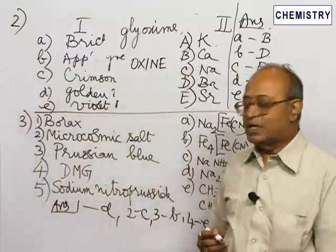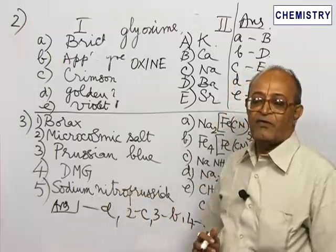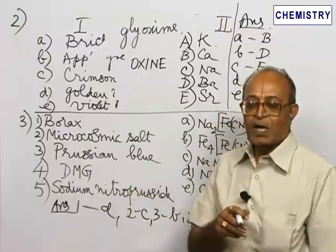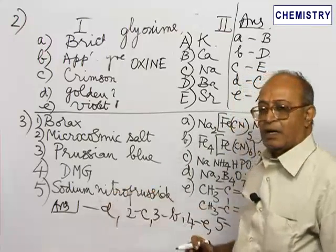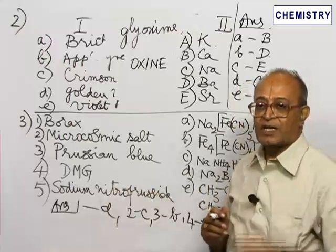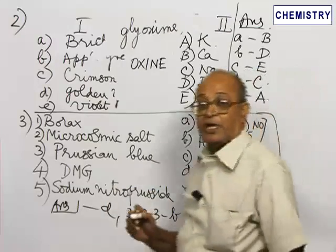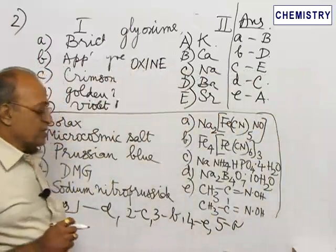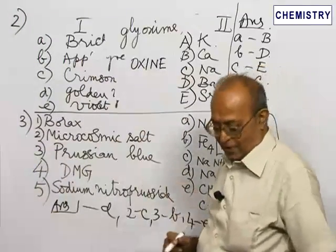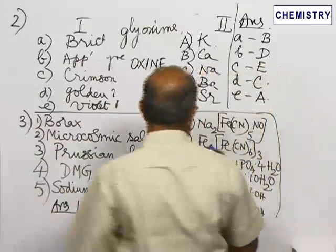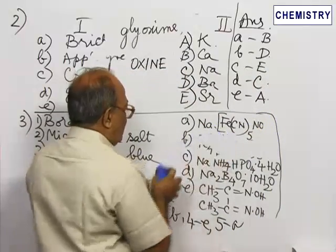DMG, dimethylglyoxime, will give a rosy red precipitate with nickel ion. Last one: sodium nitroprusside. As mentioned in the last class, sodium nitroprusside is a reagent for the sulphide radical. If sodium sulphide is present, add sodium nitroprusside solution and you get a violet coloration. Sodium nitroprusside is A — it is a complex, and the violet coloration formed is also another complex.